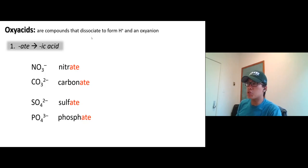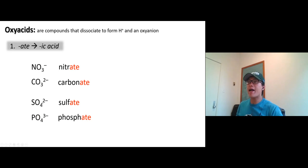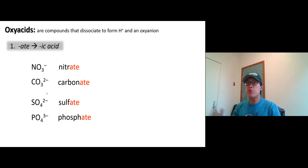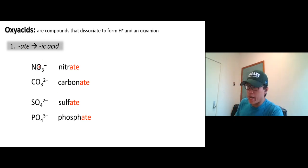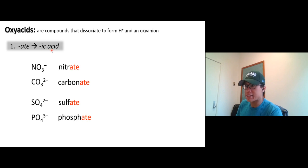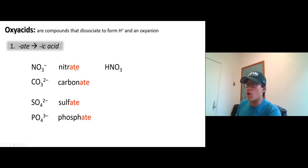Oxyacids are compounds that dissociate in water to form a proton and an oxyanion. The oxyanions — nitrate, carbonate, sulfate, phosphate — are ones you should memorize, because you'll see them often. Naming oxyacids can be derived from the main oxyanion. When they end in -ate and become an acid, we end with -ic acid. For example, nitrate (charge -1) can accept one proton to become neutral, and we call that nitric acid.